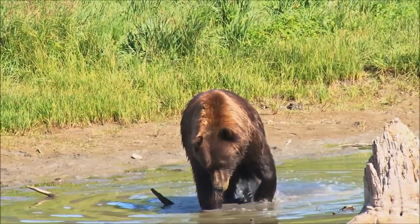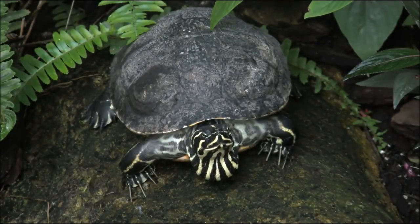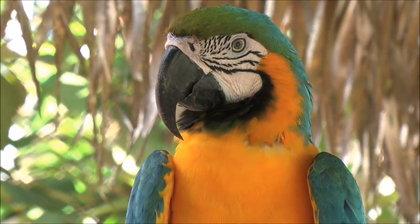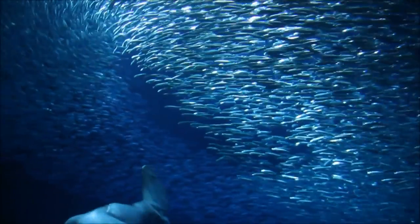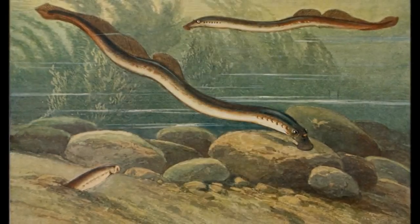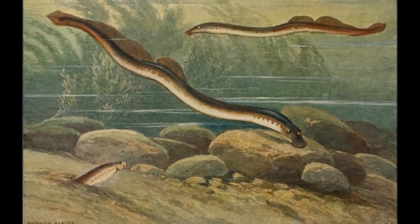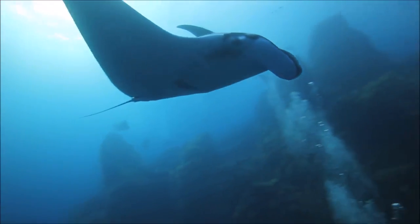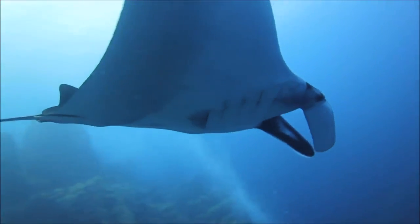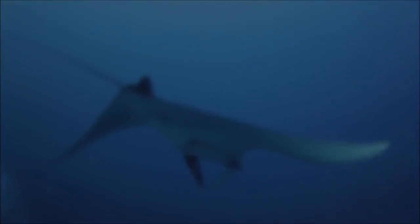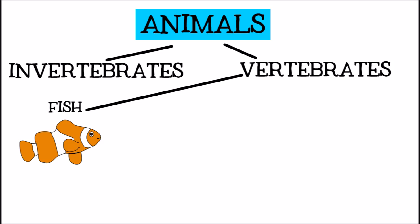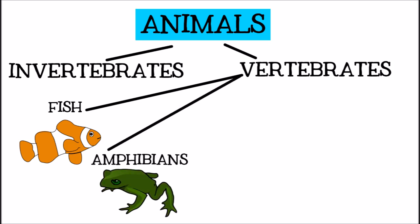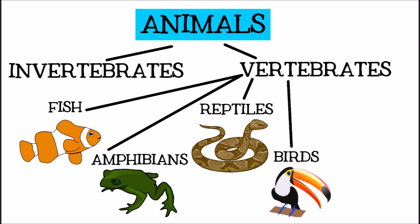Vertebrates make up less than 5% of all animal species on Earth, but if I asked you to think of an animal, you would probably choose a vertebrate. Vertebrates are divided into different classes, or groups. Several of these classes are specific types of fish — for example, jawless fish like lampreys and hagfish, and cartilaginous fish like sharks and rays. For simplicity's sake, these other classes are usually lumped together with bony fish and just called fish. The four remaining classes of vertebrates will all be very familiar: amphibians, reptiles, birds, and mammals.